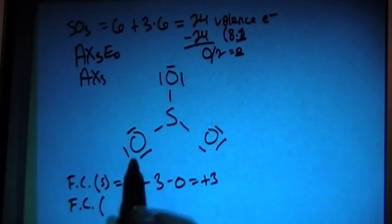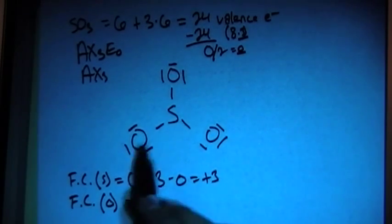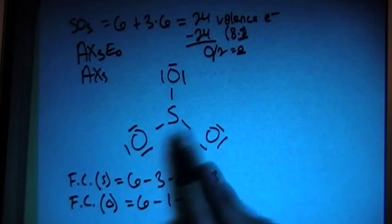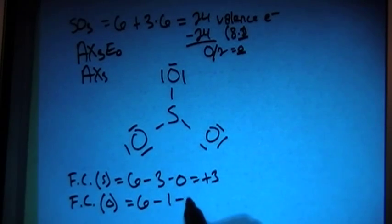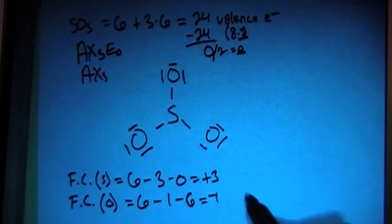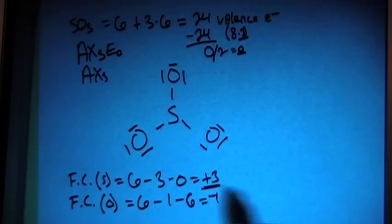Now we can check the formal charges on each of the oxygens. Formal charge on the oxygen is going to be 6 valence brought in for each one, minus 1 bond, minus 6 non-bonding electrons for each one, which gives us a negative 1 formal charge for each oxygen. So if you sum those up, it's going to give you 0, but you don't want this plus 3. You always want to have as close to 0 as possible.